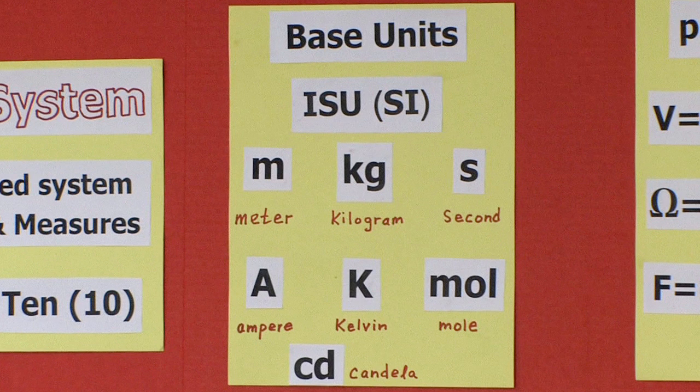These base units are the meter, the kilogram, second, the ampere — a measure of electrical current — Kelvin for temperature, mole for molecular quantity, and candela for light intensity.